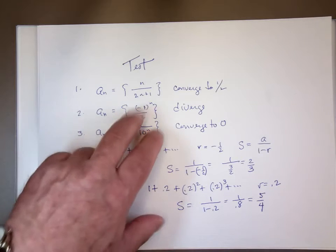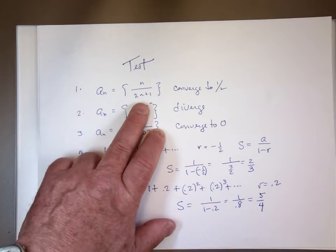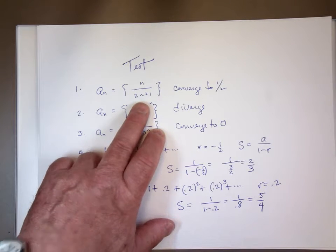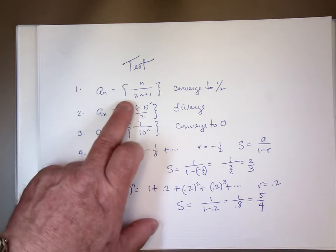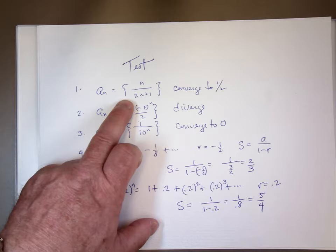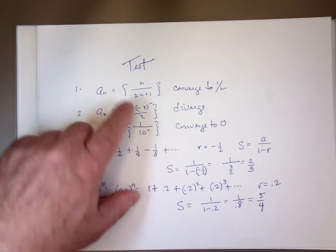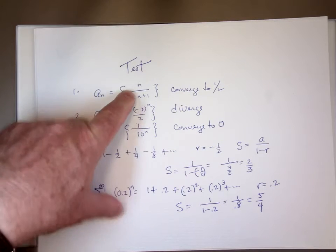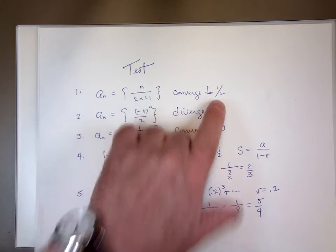The first one: the nth term of the sequence is n over 2n plus 1. It converges to one-half. Take the limit as n goes to infinity. As long as the sequence's nth term has a finite and real limit, the sequence will converge. So this sequence converges to one-half.